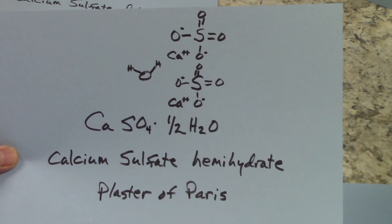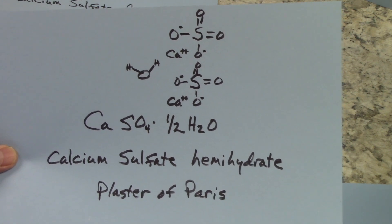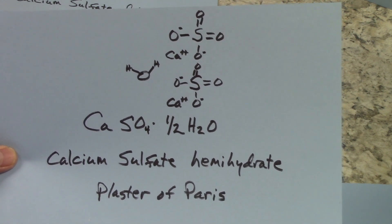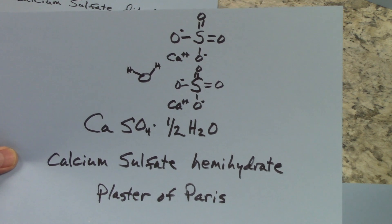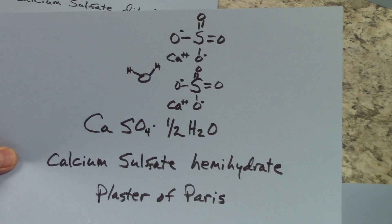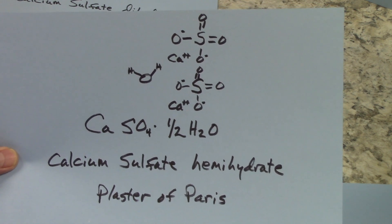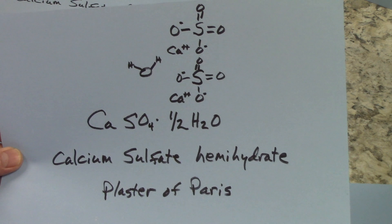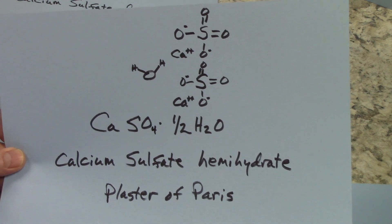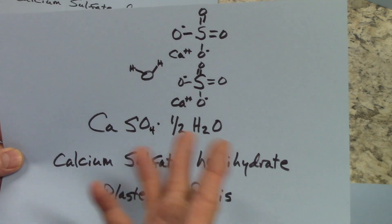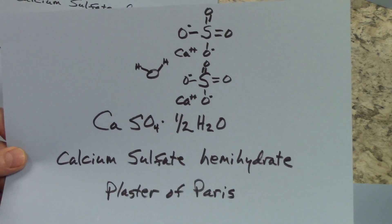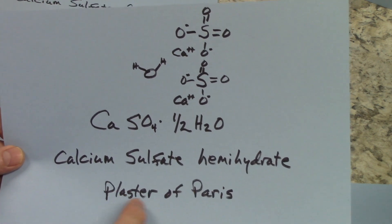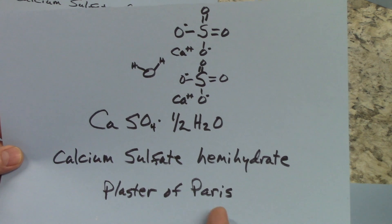It's also called plaster of Paris. The reason they call it that is because in the early 18th century they found a huge gypsum quarry just outside of Paris, France. This is what started all this chemistry that we're talking about today, and so they affectionately call it plaster of Paris.